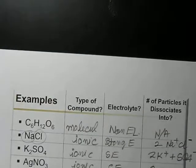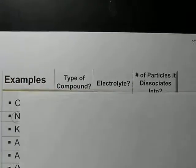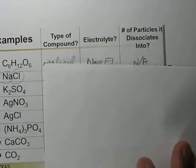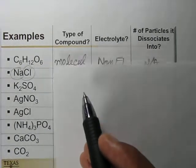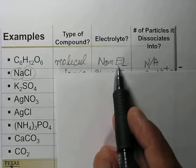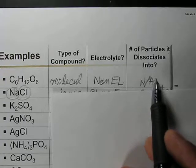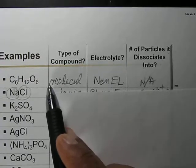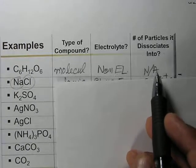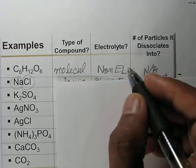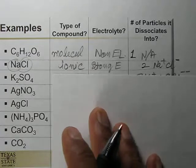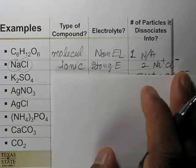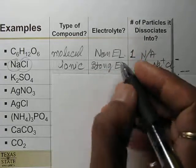Let's classify specific compounds using a table. C6H12O6 (glucose) is a molecular compound and a non-electrolyte — it does not dissociate, so one molecule remains as one molecule. Sodium chloride (NaCl) is an ionic compound and a strong electrolyte — it dissociates into two ions: sodium ion and chloride ion.